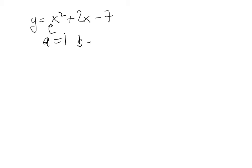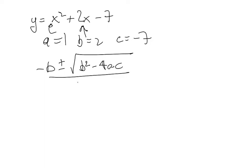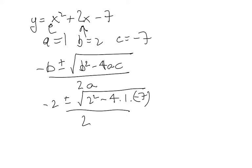b is equal to 2, and c is equal to minus 7. So the roots are minus b plus or minus square root of b squared minus 4ac over 2a. So that's minus 2 plus or minus square root of 2 squared minus 4 by 1 by minus 7, so minus 4 is equal to over 2 by 1.